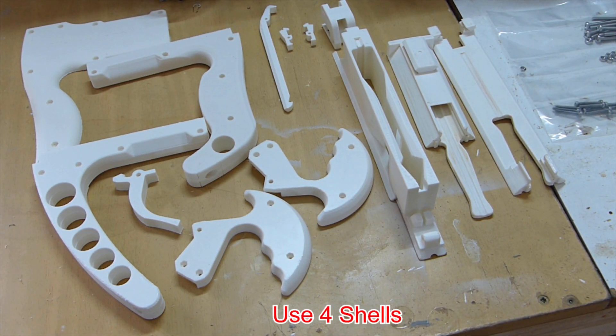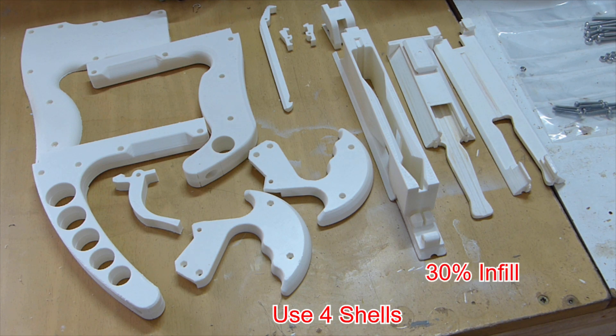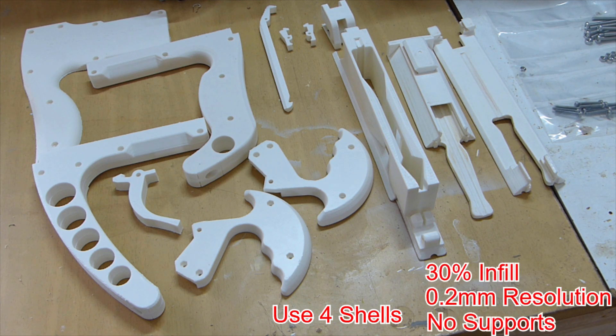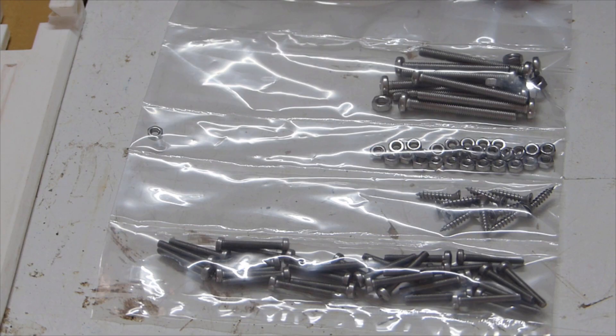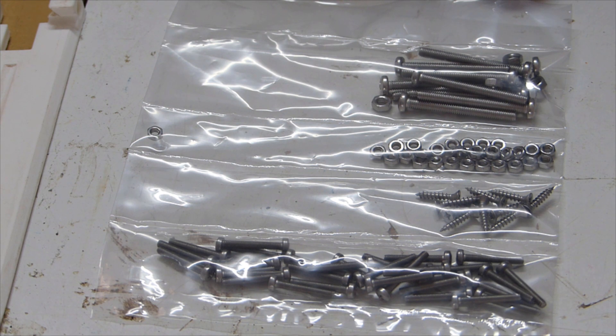All 13 parts are 3D printed in PLA with 30% infill at 0.2mm resolution and no supports are required. It is important to follow the PDF document in the link below for the orientation for 3D printing the parts. An assortment of M3 and M4 nuts and bolts are required to put the pieces together and 3 springs are also required.